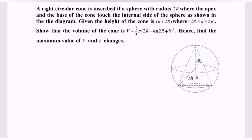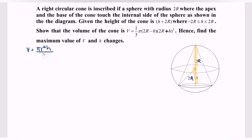Given the height of the cone is h plus 2R, where R is the radius of the sphere and the total height is 2R plus h, and the value of h is between negative 2R and 2R. We need to show that the volume of the cone satisfies a particular expression. The volume formula for a cone is V = πr²h/3, so we substitute the values of r and h.